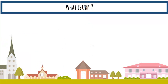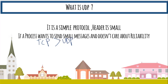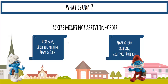UDP is a simple protocol with a small header. The header is small compared to TCP's header — we will see later that TCP's header is almost 60% larger than UDP's. UDP keeps sending small messages and doesn't care about reliability. Another characteristic is that packets in UDP may not arrive in order.